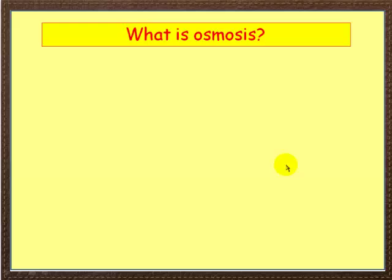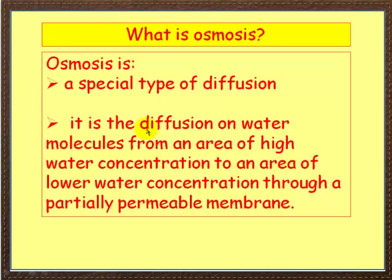Let's first of all start off by defining what osmosis is. You may have come across diffusion, but osmosis is a special type of diffusion. By definition, osmosis involves simply the diffusion of water molecules — we're only talking about diffusion of water molecules — from an area of high water concentration to an area of lower water concentration through a partially permeable membrane.